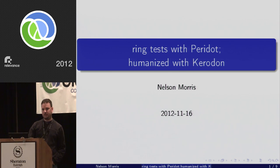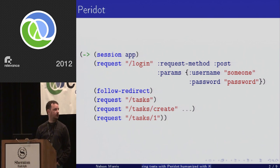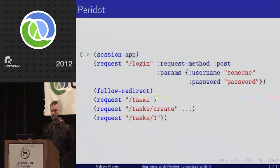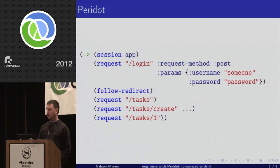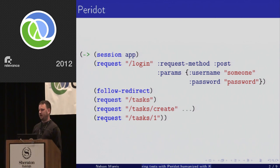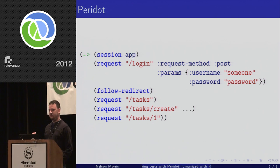The first one I want to talk about is called Peridot. It is basically a port of RackTest, if you're familiar with that from the Ruby community. It uses the thread-first macro to simulate an iterative or imperative interaction. You start by creating a session and then you can do a request — in this case, to a login endpoint, passing keyword parameters. It uses ring-mock underneath, so these are the exact keywords you see in the Ring spec for your requests.